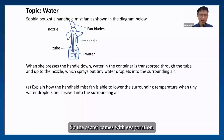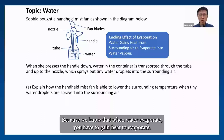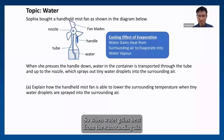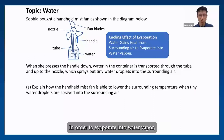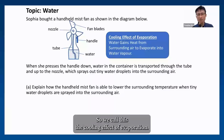The secret comes with evaporation. How does evaporation cool things down? When water evaporates, it has to gain heat to evaporate. So when water gains heat from the surrounding air in order to evaporate into water vapor, the surrounding air actually loses heat to that water. We call this the cooling effect of evaporation.